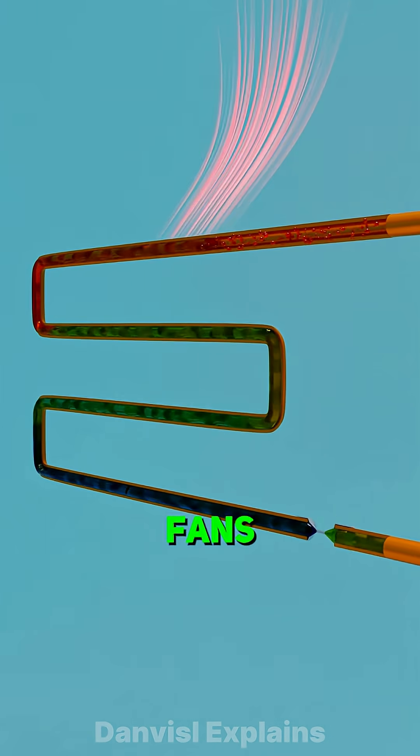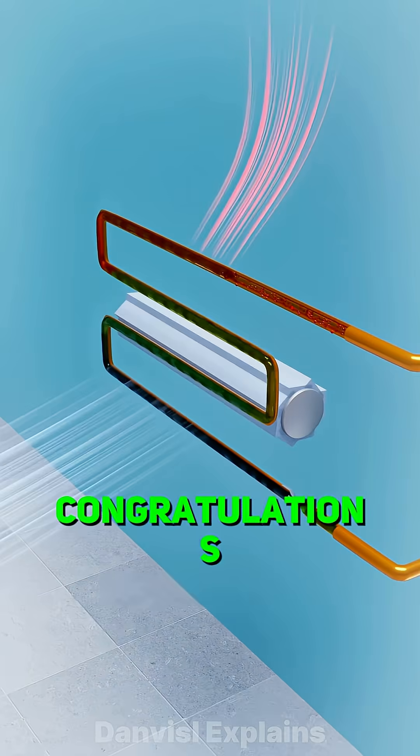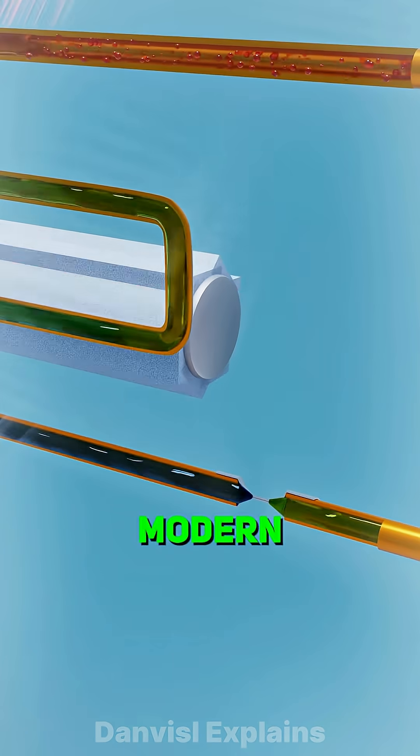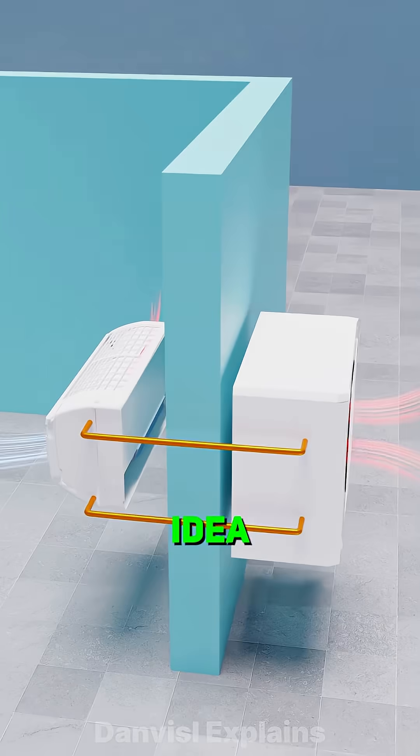Add sensors and fans, split it into an indoor and outdoor unit, and congratulations, you've just built the modern air conditioner. Simple idea. Genius engineering.